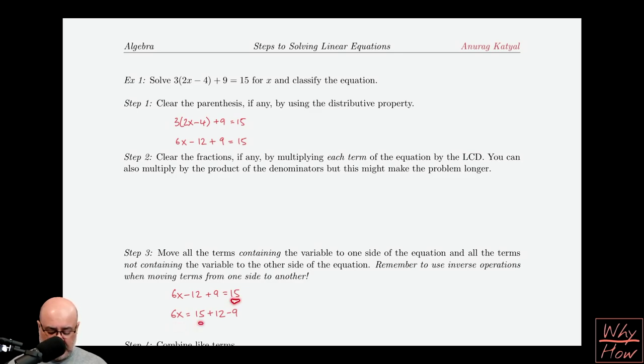The 15 stays on the right-hand side, but the 12 is being subtracted. The inverse operation of subtraction is addition. So when we move the 12 over to the right side, we have to add it. Similarly, the 9 is being added on the left-hand side. So when we move the 9 over to the right-hand side, we would need to subtract it.